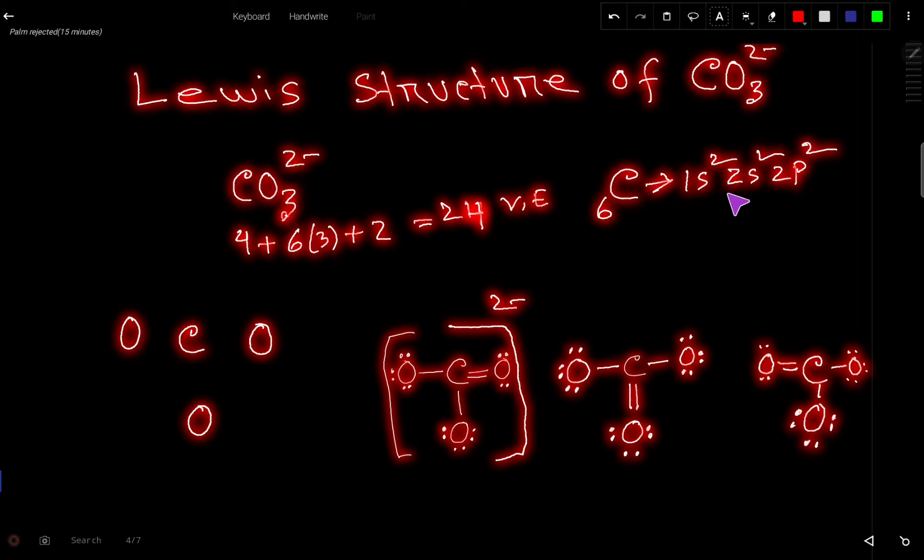Remember that the second shell is the valence shell for carbon, but there is no empty 2d orbital in the second shell, so carbon doesn't expand its octet. It just holds 8 valence electrons in CO₃ ion.